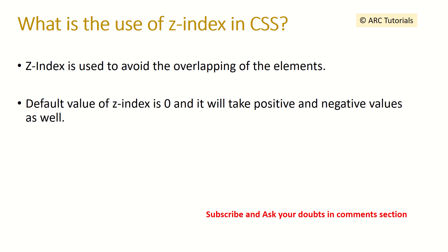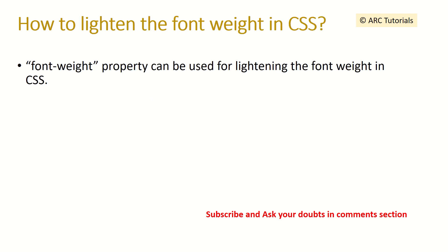What is the use of Z-index in CSS? Z-index is used to avoid the overlapping of elements. By default the value of Z-index is zero, and it can take positive and negative values as well. If you want to position one element over another, we can use Z-index with a value like negative one.